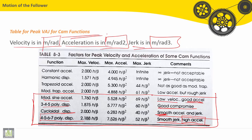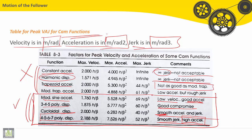These ones are not good because constant acceleration provides infinite jerk - not acceptable. Harmonic displacement too is not acceptable because it provides infinite jerk. Trapezoidal acceleration is not as good as modified trapezoidal. Modified trapezoidal acceleration provides low acceleration but rough jerk.